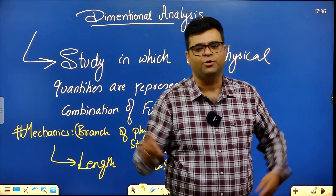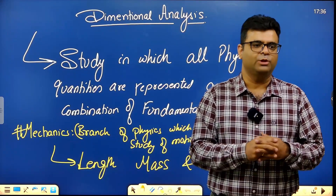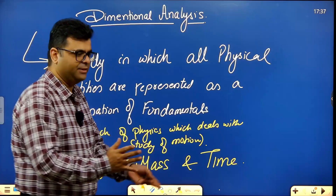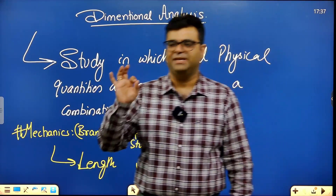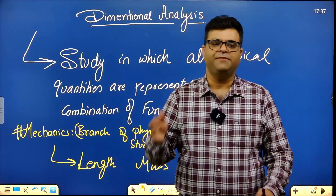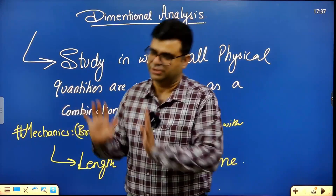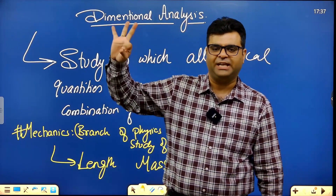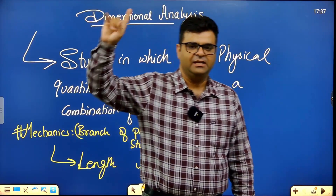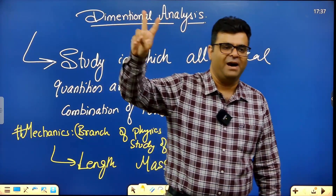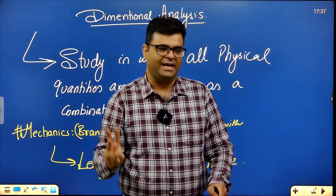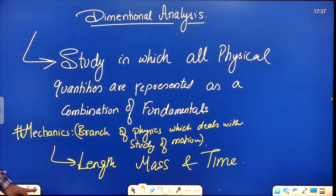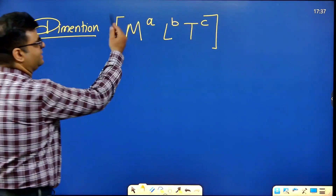Derived quantity is the quantity which cannot be further subdivided, or rather, derived quantity is the combination of fundamental quantities in different proportions. In mechanics, we have three fundamental quantities: length, mass, and time. Every quantity in mechanics will be a combination of these three, expressed using square bracket notation.